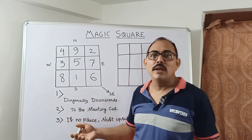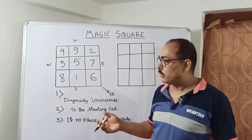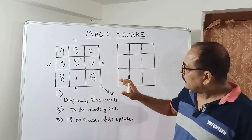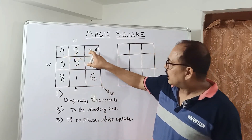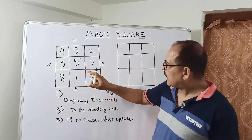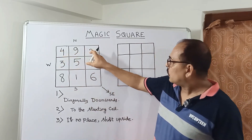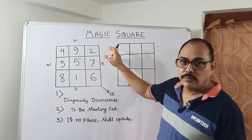Next time we will learn 5 by 5 and 4 by 4 order magic squares also. In a magic square, we allot some numbers in such a way that the sum of all the numbers row wise or column wise will be the same.